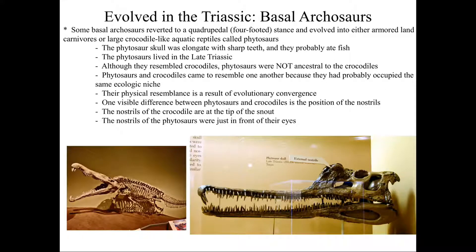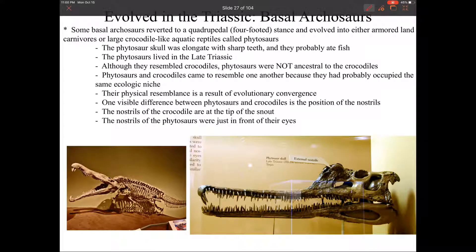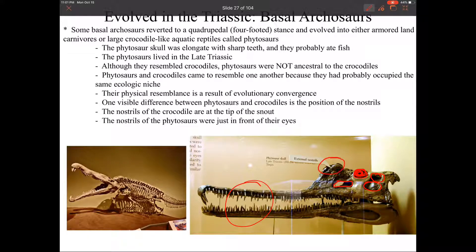One basal archosaur we can look at is our phytosaurs. Phytosaurs kind of artificially look like crocodiles — you can see these teeth, this is definitely a fish eater. But what makes it very different from the crocodile is the position of the nose. If we orient ourselves to the skull, here we have the eye, and back here we have the diapsid condition with the upper and lower holes. Here we have the sinus cavity, and here we have the nose — you can see the nose is in between the eyes. With crocodiles, the nose is at the tip of the snout. So even though they have very similar body shapes, this is what we call convergent evolution — they are actually quite different.